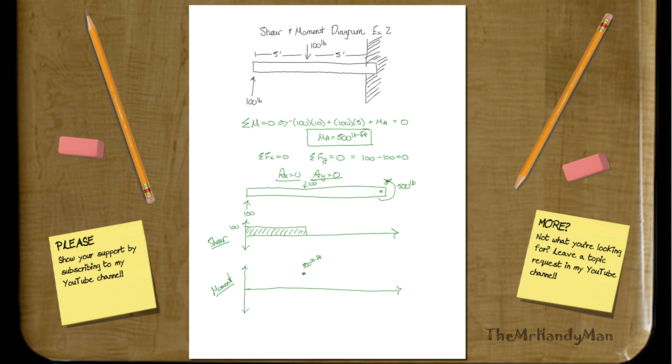So, it should look, since we have zero right at the end of the cantilever beam, it's going to be something like this. Then, it's going to retain the moment all the way until we get to the end. This is supposed to be flat, so just try and flatten it out for us. But, regardless, this is 500 pound feet.